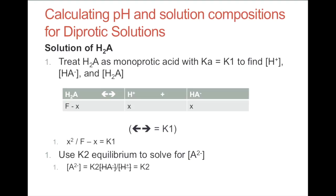Now, calculating pH in solution compositions for diprotic solutions. For a solution of H₂A, we treat it as a monoprotic acid with Ka = K₁ to find H⁺, HA⁻, and H₂A. We set up the equilibrium expression: X² / (F − X) = K₁. Then we use the K₂ equilibrium to solve for A²⁻. Since H⁺ equals HA⁻ (both X), those cancel, and A²⁻ equals K₂.